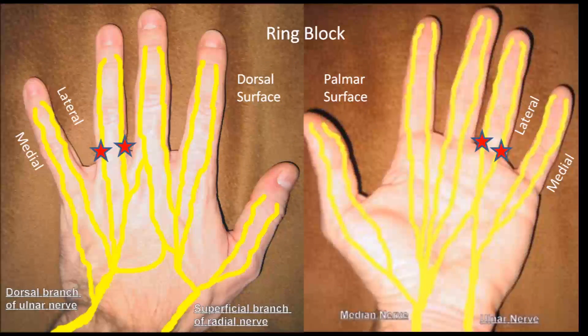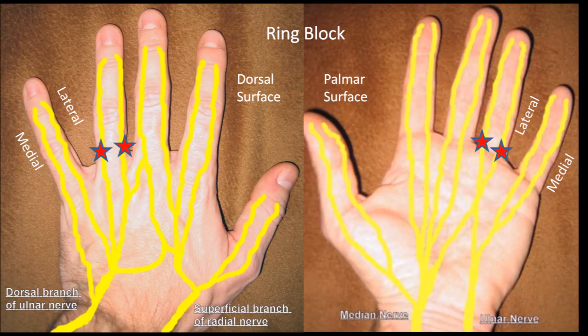The ring block is one of the most common methods used to achieve a digital block. This is where you inject at 4 sites distally to the MCP, aiming to anaesthetize each digital nerve individually. It is very effective for treating conditions such as a nail bed injury.